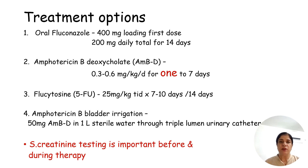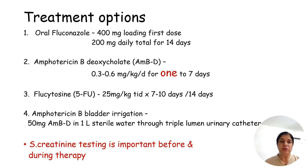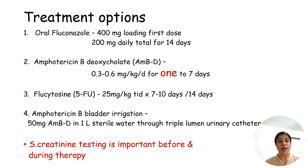Treatment options include three drugs: fluconazole, amphotericin B deoxycholate, and flucytosine. Fluconazole is an oral drug given for 14 days — a loading dose of 400 mg, then 200 mg daily. Where fluconazole cannot be used, amphotericin B deoxycholate can be given for 1 to 7 days; because of its prolonged urinary excretion, even a single-day dose can be effective, and it can be combined with oral flucytosine. For lower UTI, treatment is given for 7 days; for upper UTI, for 2 weeks.